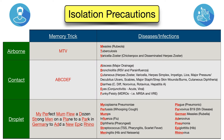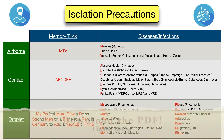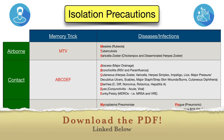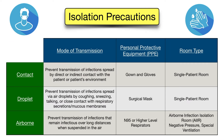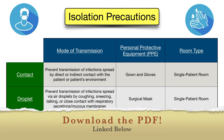I put together a table to help organize the information for you — you can download the PDF for the table and notes linked below. It includes the type of precaution, the memory trick, and the example infections or diseases in each category. I also put together a table going over the personal protective equipment and types of rooms the patient should be in for each precaution.